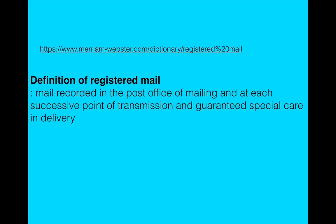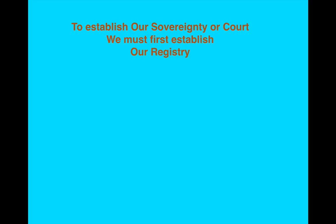Registered mail is the highest order in the post office. To establish our sovereignty or court, we must first establish our registry. We've relied on their registry — the registry of births, deaths, and marriages — and as you heard in the previous video, the only two courts of record in New Zealand are births, deaths, and marriages and Land Information New Zealand. So now we're going to have our own registry.